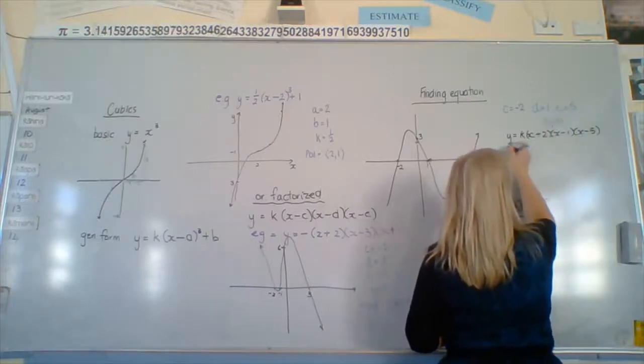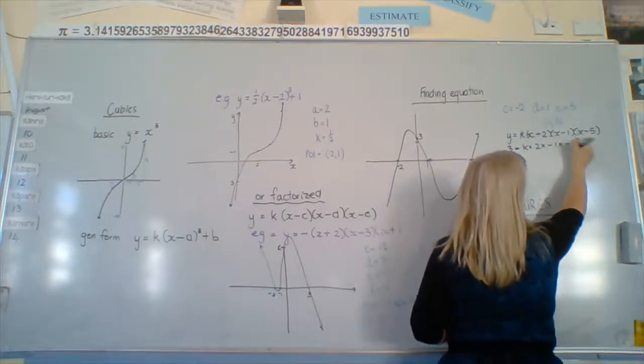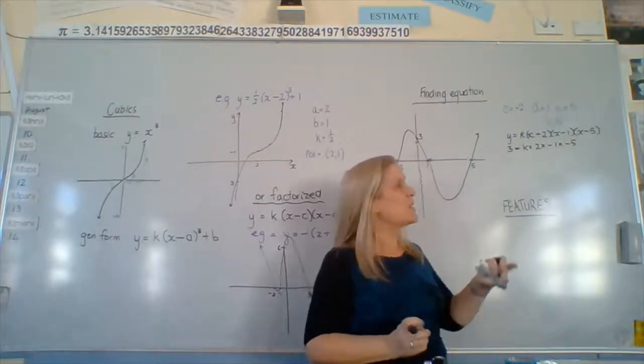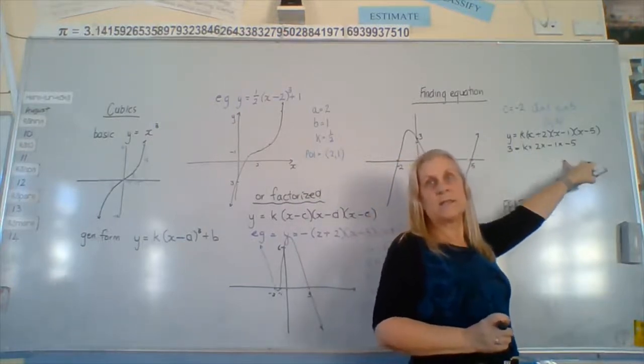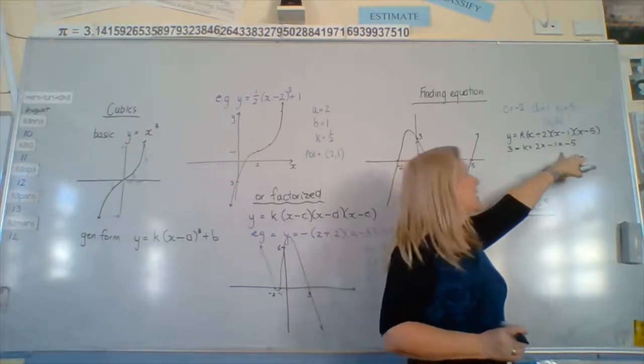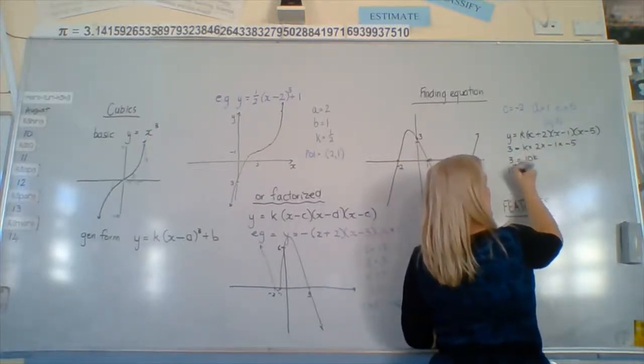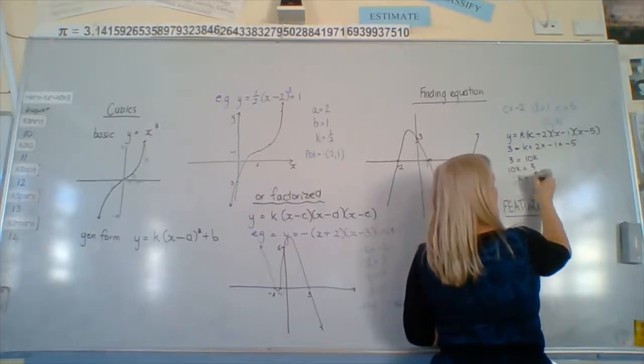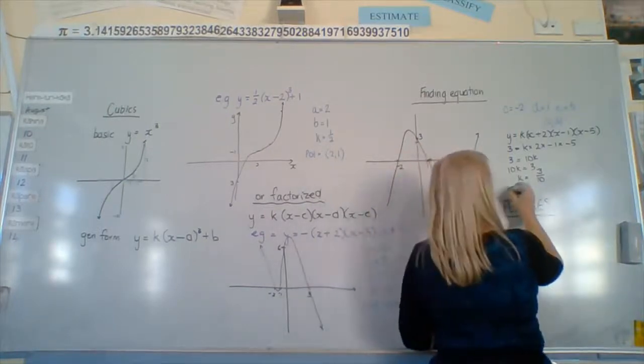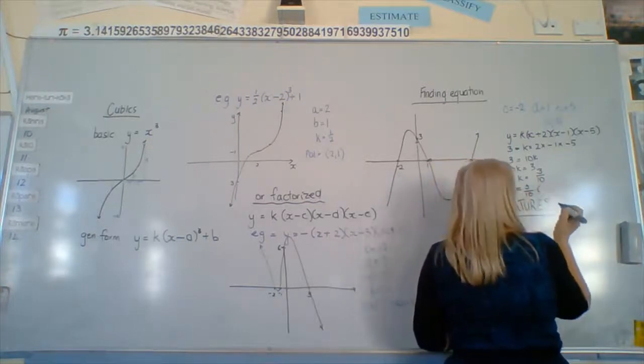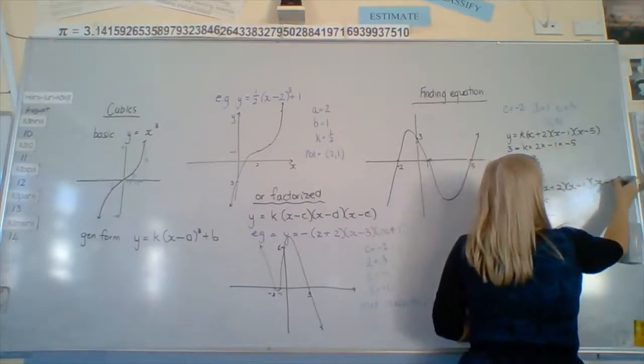So 3 equals k times 2 times negative 1 times negative 5. I put 0 in for all those x's, and it's just left the numbers that are there. So what do I get next? 10k. Good. 3 equals 10k, so k is going to equal 3 over 10. So we're going to put that back in so we get our actual equation. Because we don't just find k, we're finding k to replace it in the equation. Done.